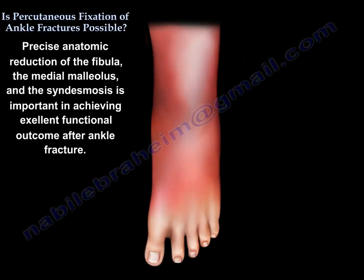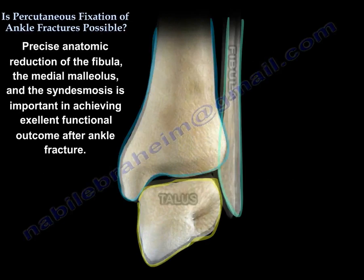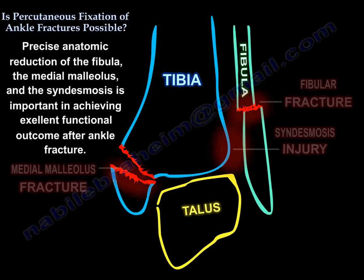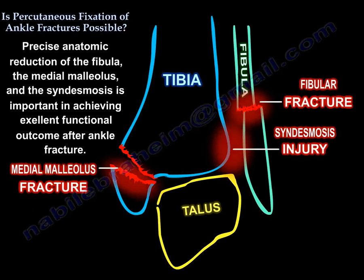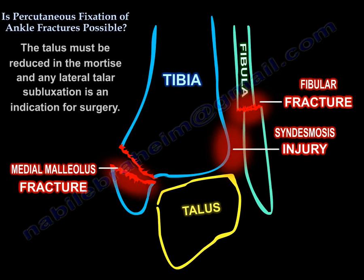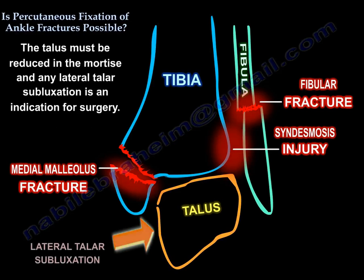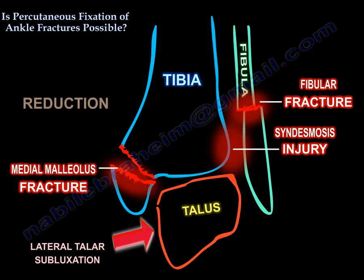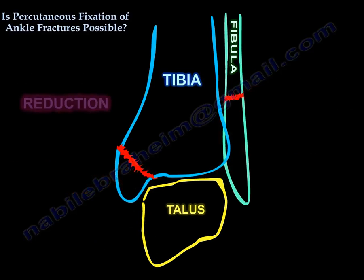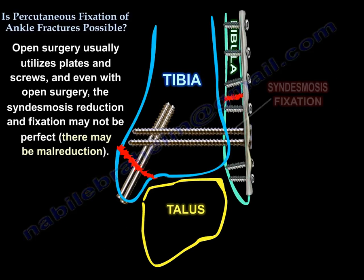Precise anatomic reduction of the fibula, the medial malleolus, and the syndesmosis is important in achieving excellent functional outcomes after ankle fracture. The talus must be reduced in the mortise, and any lateral talar subluxation is an indication for surgery.